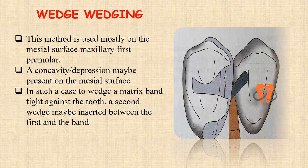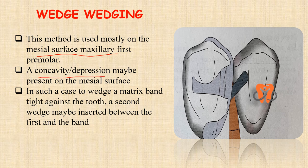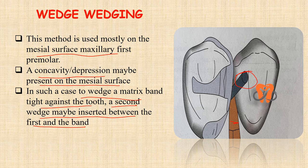The third modification is called wedge wedging. This method is mostly used on the mesial surface of the maxillary first premolar. There may be a concavity or depression present on the mesial surface of the first premolar. In such a case, to wedge a matrix band tight against the tooth, a second wedge may be inserted between the first and the band. As you can see in the picture, this second wedge has been inserted between the first wedge and the matrix band, making the matrix band tight against the tooth.